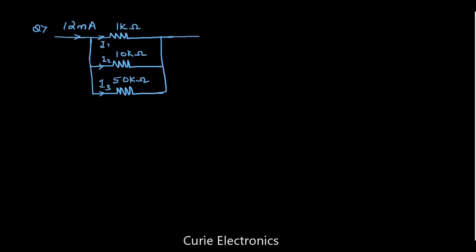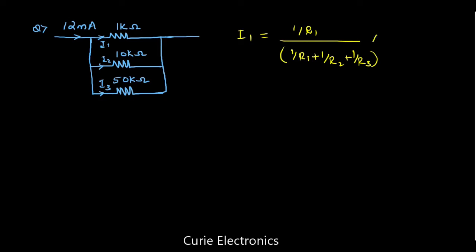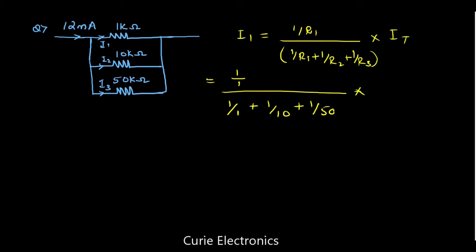Let us take one more example — this is the second problem. We will find I1, I2, and I3 for resistors of 1 kilohm, 10 kilohm, and 50 kilohm. I1 equals 1 upon 1, divided by 1 upon 1 plus 1 upon 10 plus 1 upon 50, multiplied by the total current of 12 milliamps. We will get the current in milliamps since we are working in kilohms.